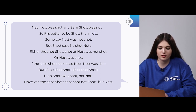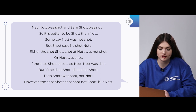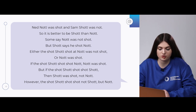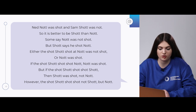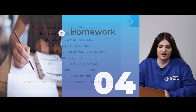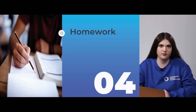Let's try it a second time, quicker: 'Not not was shot and some shot was not, so it is better to be shot than not. Some say not wasn't shot, but shot says he shot not. Either he shot shot shot at not, wasn't shot, or not was shot. If the shot shot shot not, not was shot. But if the shot shot shot shot, then shot was shot, not not. However, the shot shot shot shot not shot, but not.' I hope we are coping very well.